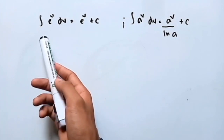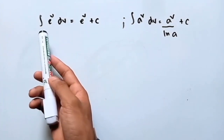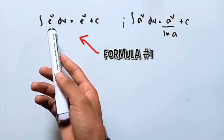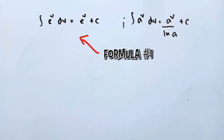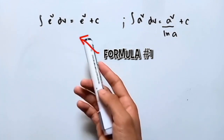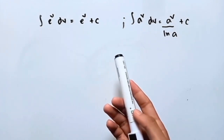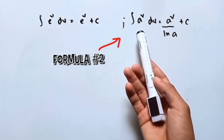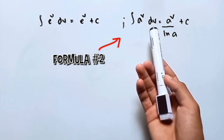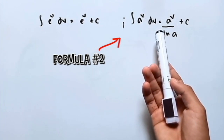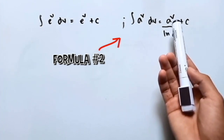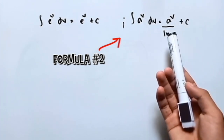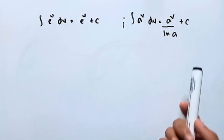So here's the formula. The integral of e raised to v with respect to v is equal to e raised to v plus c. Another one: the integral of a raised to v with respect to v is equal to a raised to v over ln of a plus c.